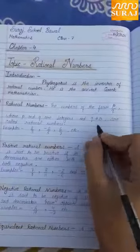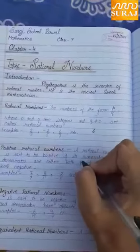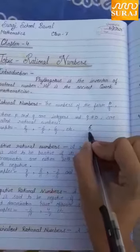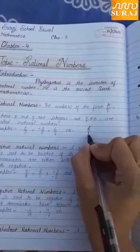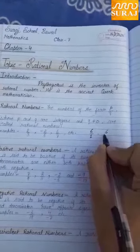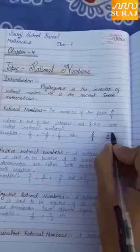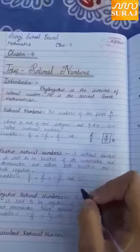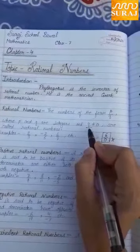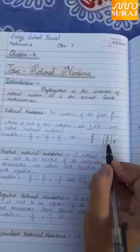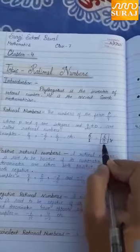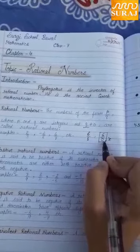For example, 6 is a rational number because we can write it as 6 upon 1. But 6 upon 0 is not a rational number, because Q must not be equal to 0. If Q ke place pe 0 hai, to vo rational number nahi hoga.